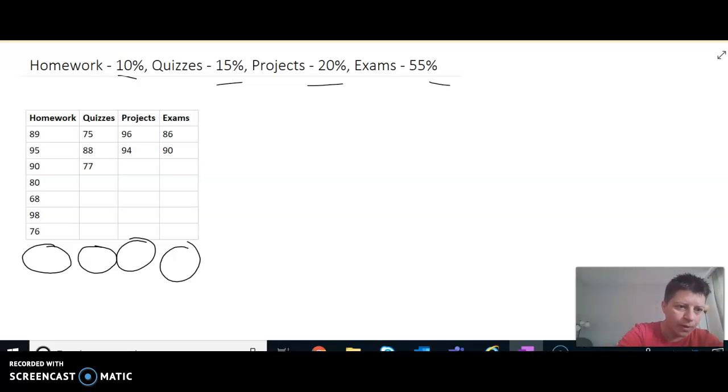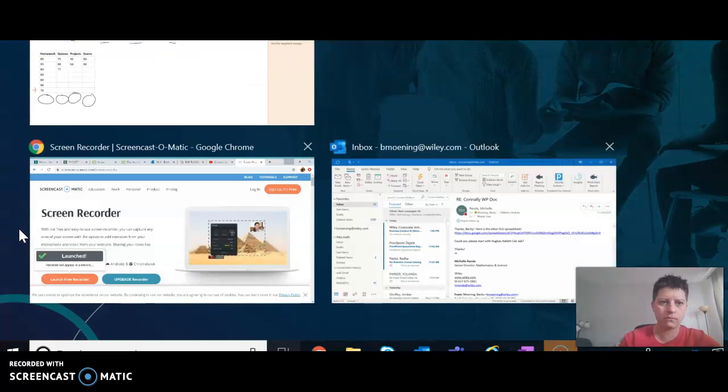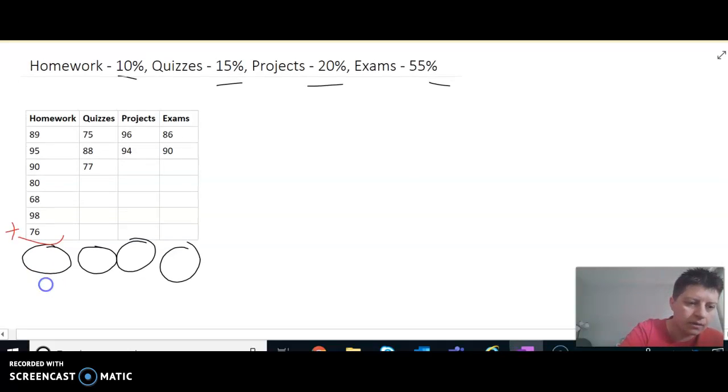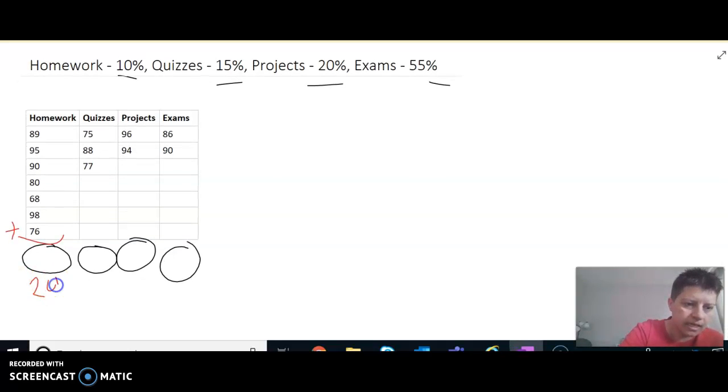Think this through. If we have seven homework values, we're going to add up all seven. When you add up those seven values in homework, you get 596. So you would take 596 divided by seven. So the homework average is 85.143. I rounded.